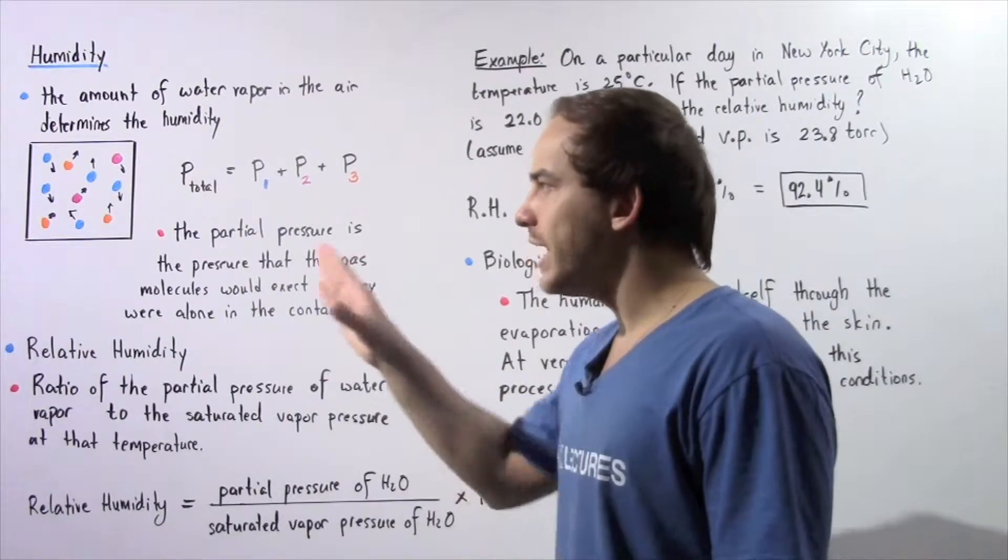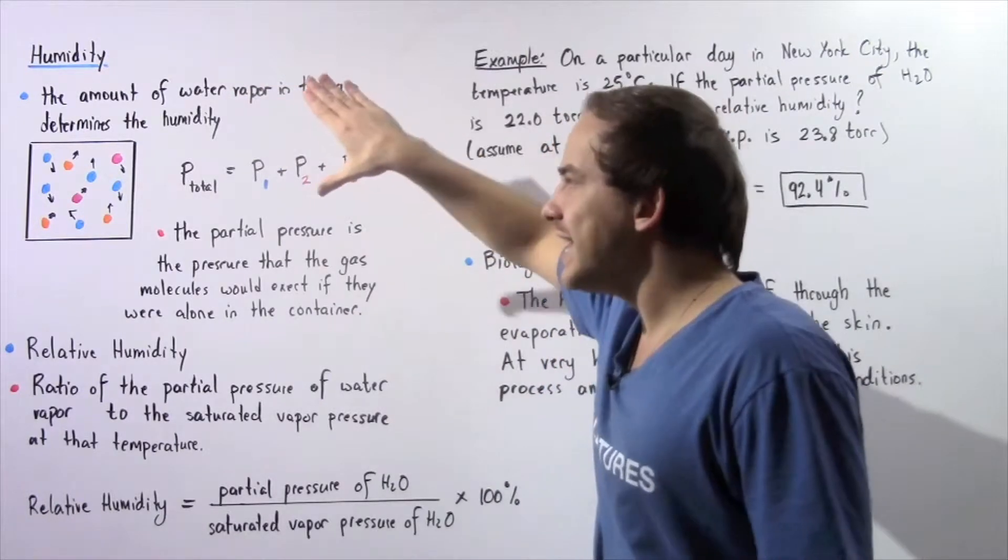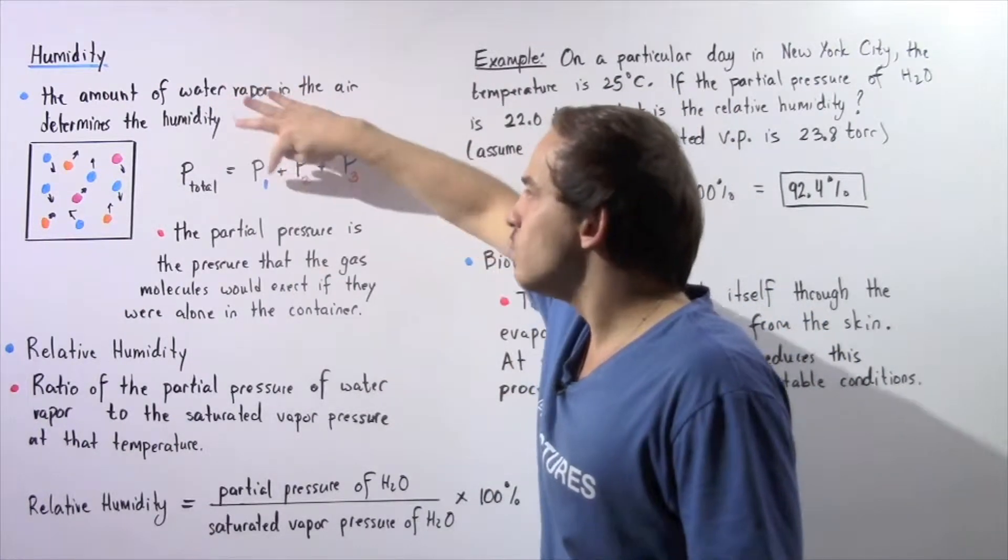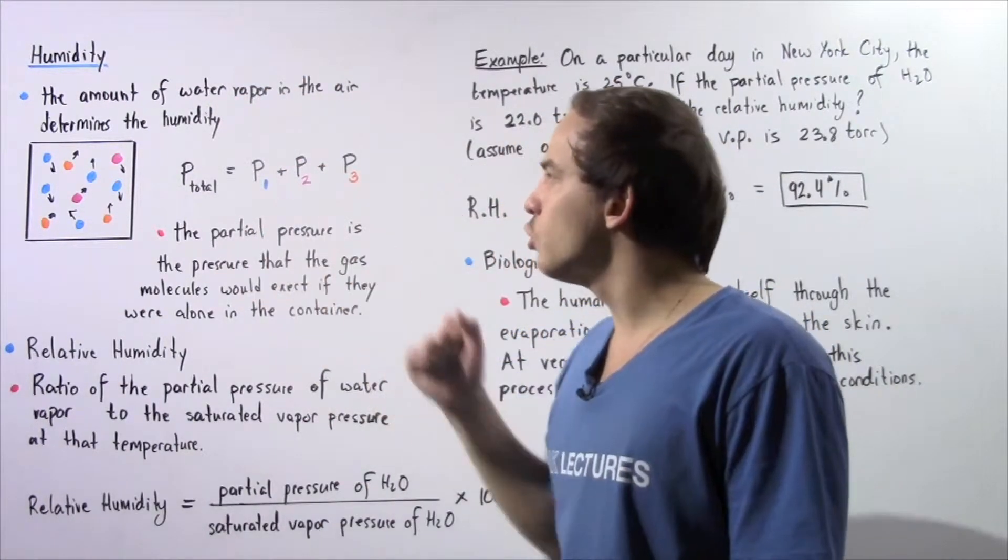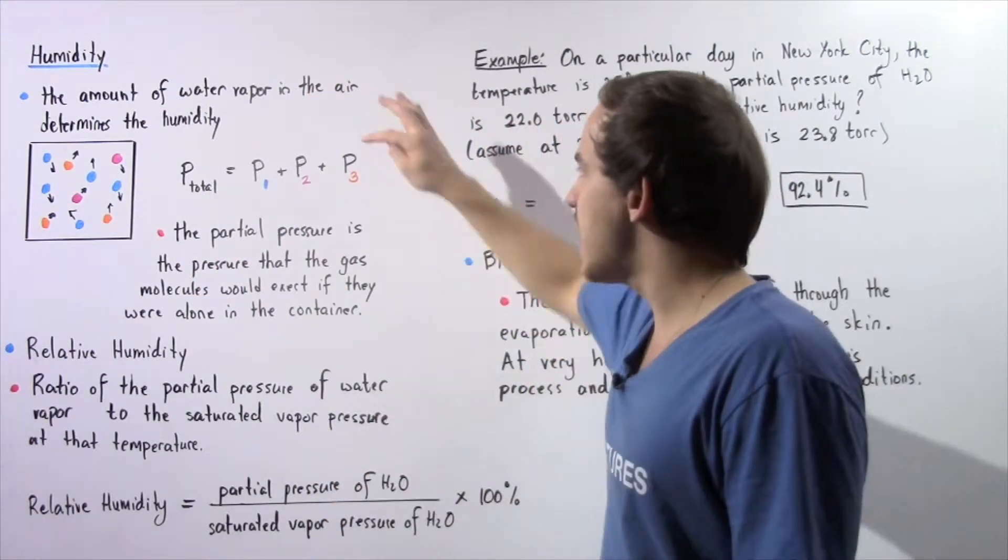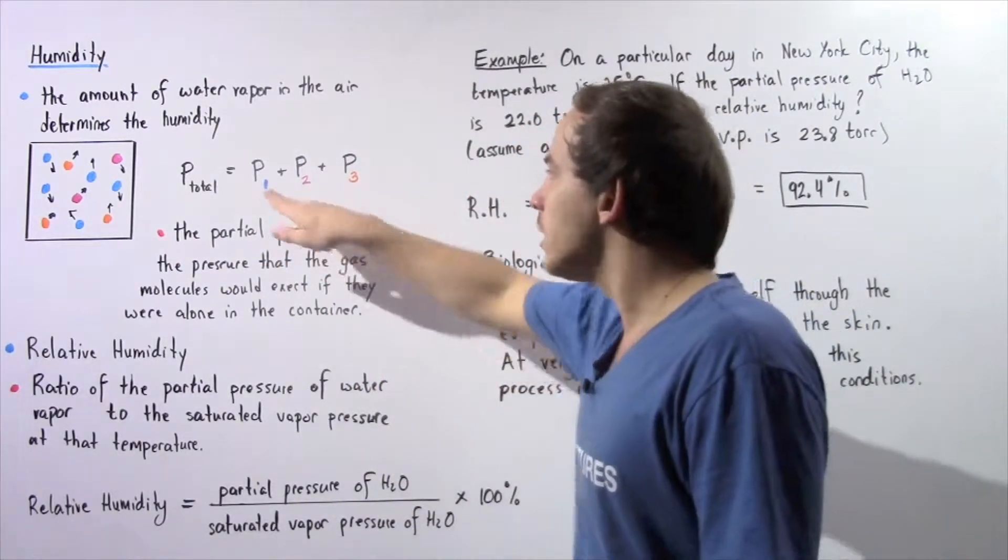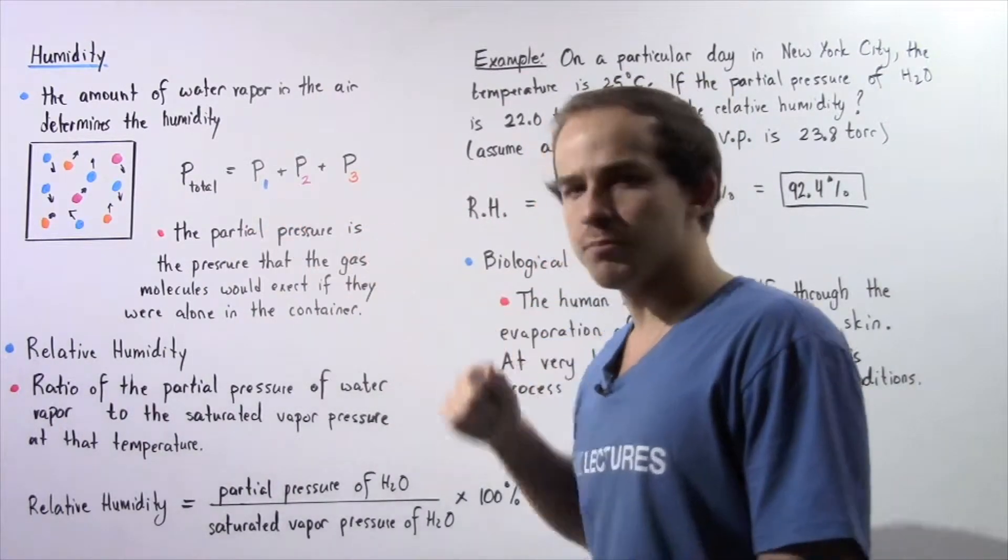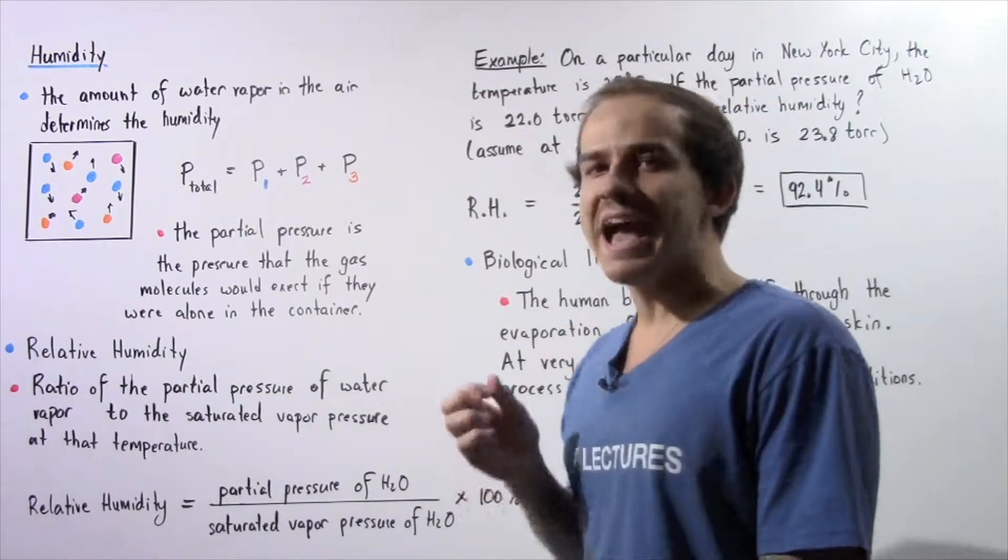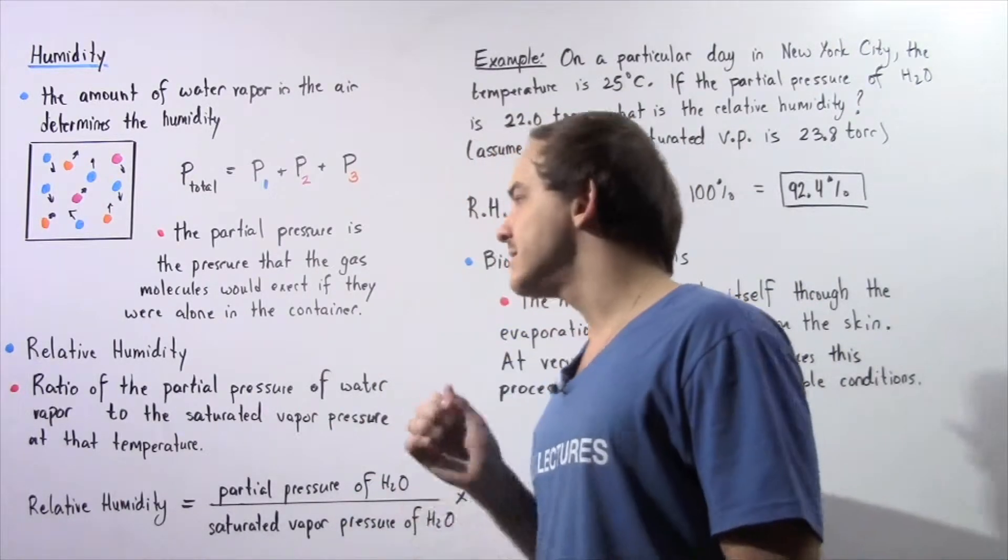Now the total pressure inside our gaseous system is simply equal to the sum of the individual pressures due to the different molecules. P1 is the pressure due to the blue molecules, P2 is the pressure due to the red molecules, and P3 is the pressure due to the orange molecules. We call these individual pressures partial pressures. The partial pressure is the pressure that the gas molecules would exert if they were alone inside that container.